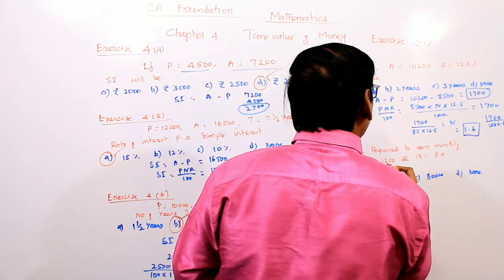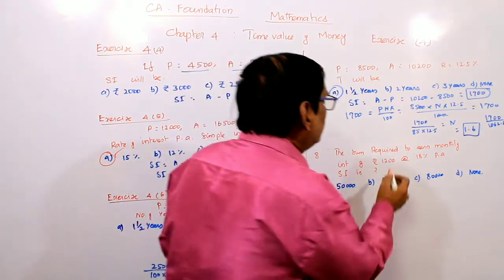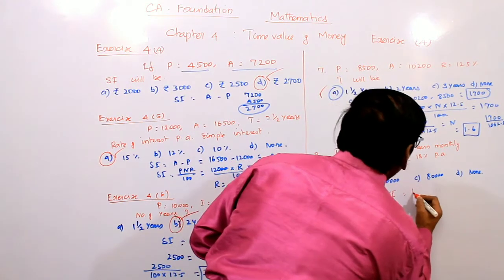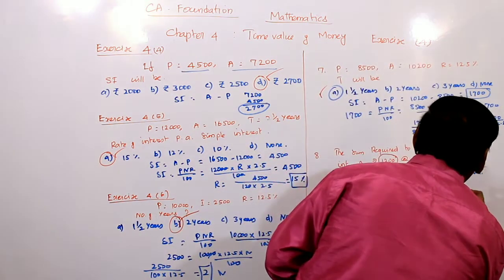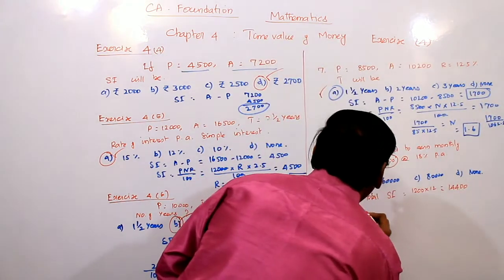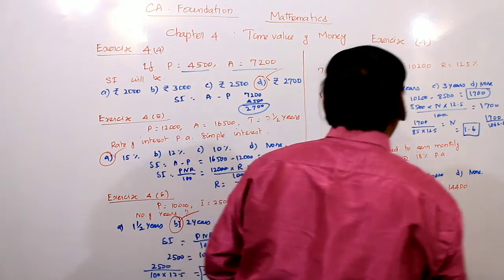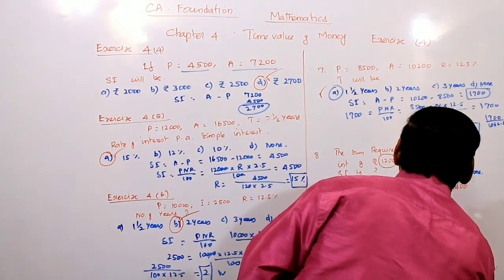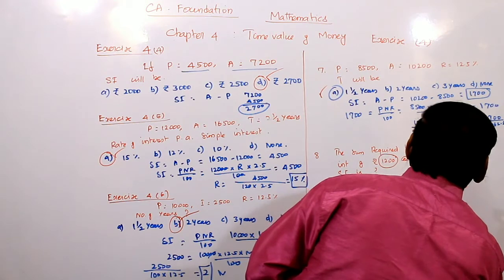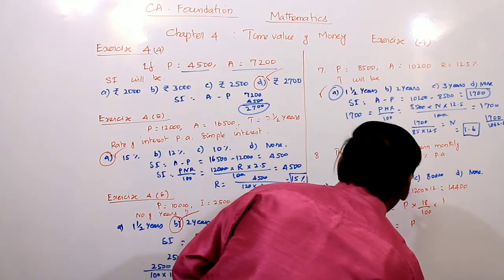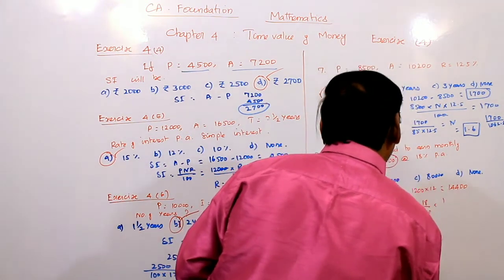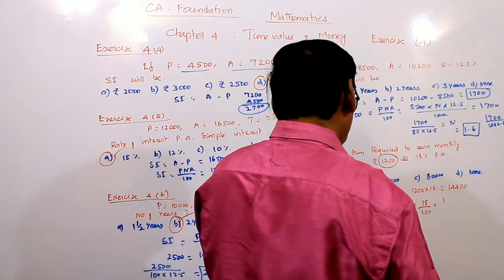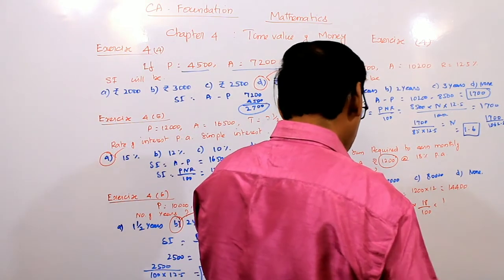Next: The sum required to earn a monthly interest of 1,200. Total annual simple interest = 1,200 into 12 = 14,400. Then the sum = 14,400 into 100 divided by 18 = 80,000. The required sum is Rs 80,000.